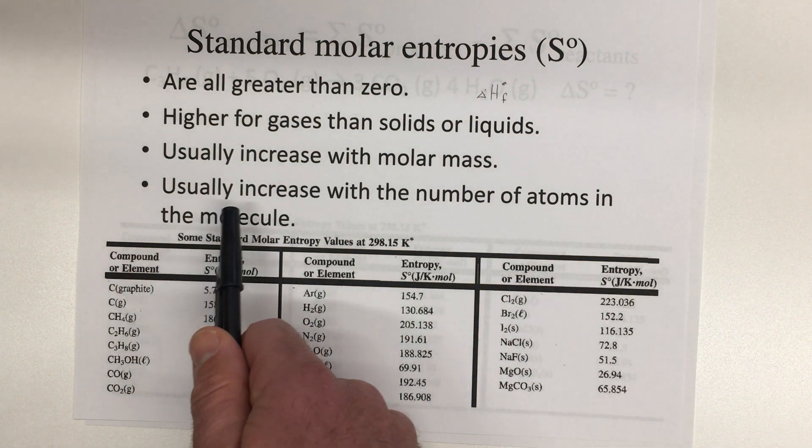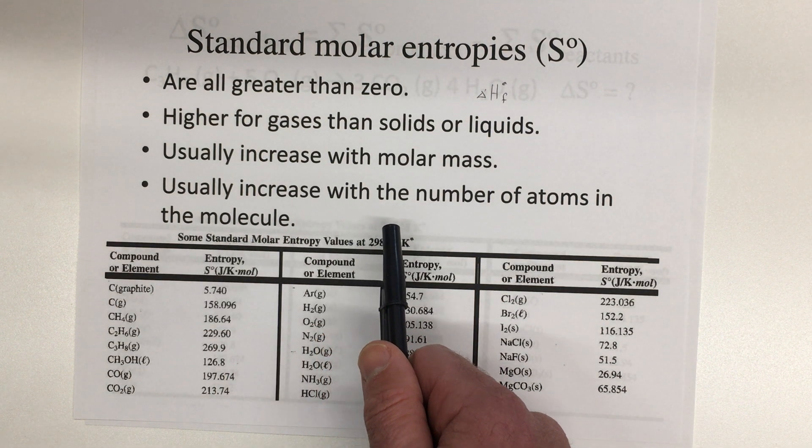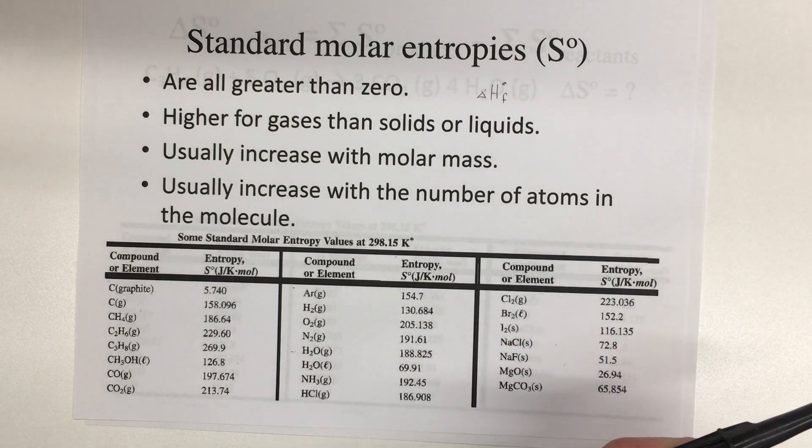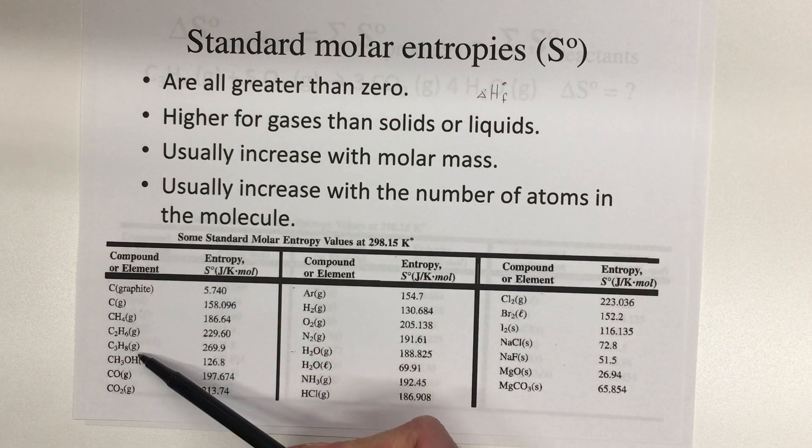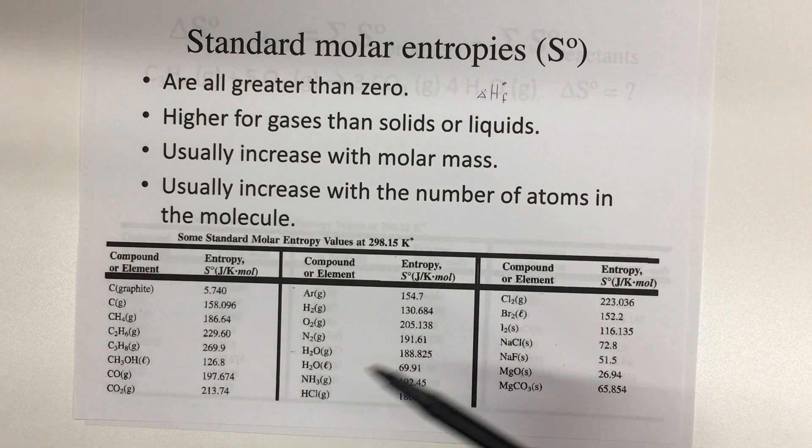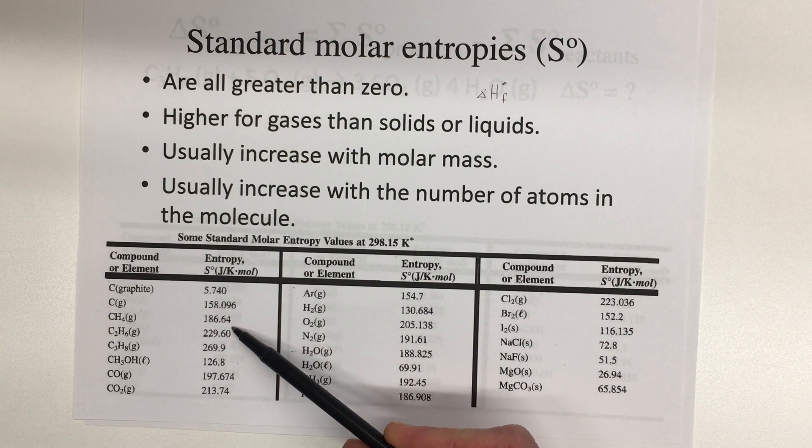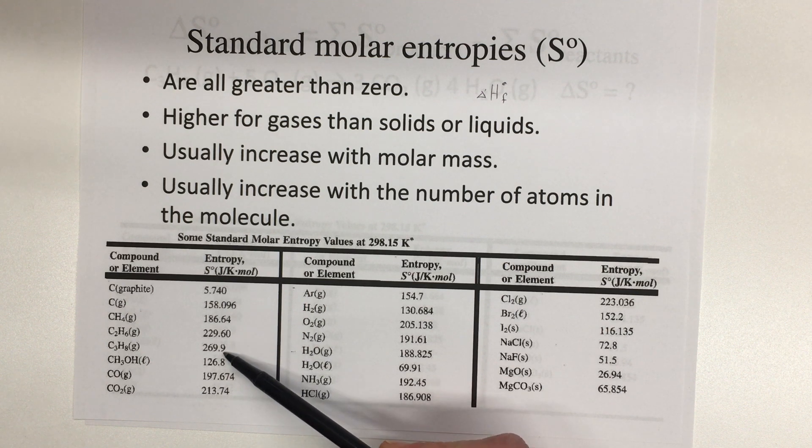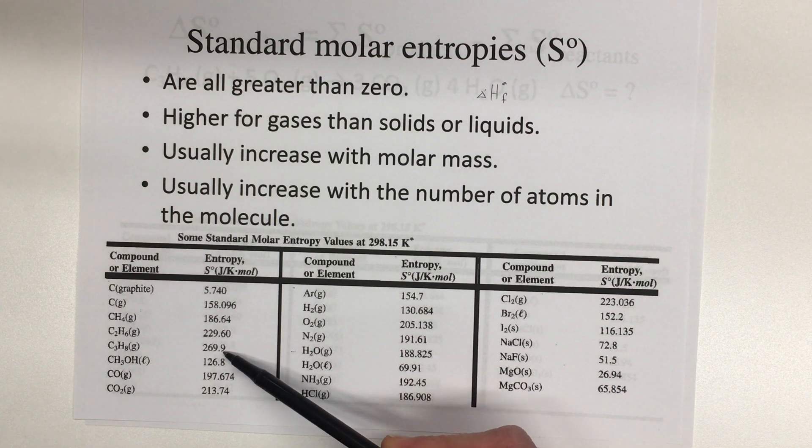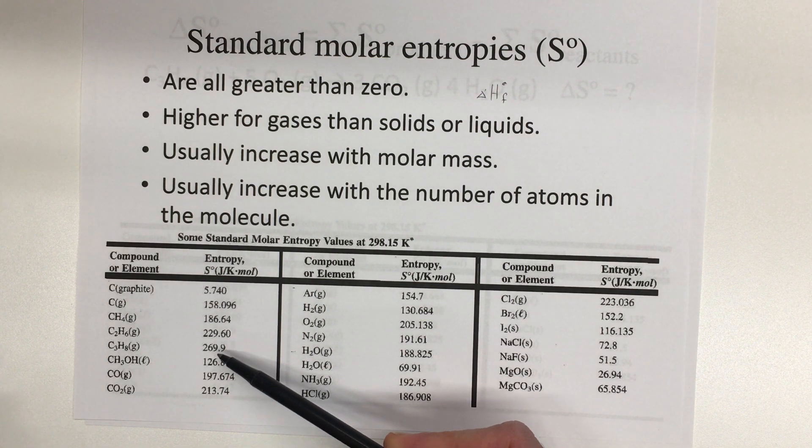And you'll also see that there's usually an increase in entropy with the number of atoms in a molecule. So along with the molar mass increasing there, you also have increasing number of atoms making up each one of those molecules, and that's another part of the reason that you see an increase in the standard molar entropy of those compounds.